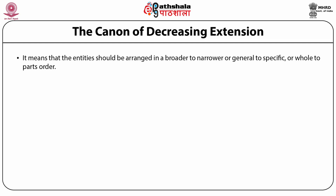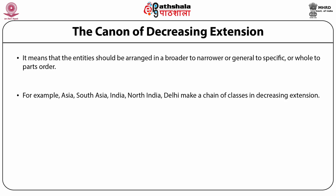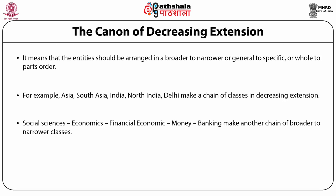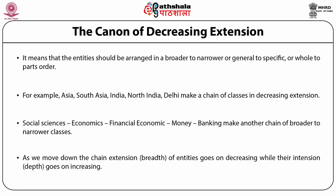The Canon of Decreasing Extension means that entities should be arranged in broader to narrower, or general to specific, or wholes to parts order. For example, Asia, South Asia, India, North India, Delhi make a chain of classes in decreasing extension — Asia is the most inclusive and Delhi the least. Similarly, Social Sciences, Economics, Financial Economics, Money, Banking make another chain of broader to narrower classes. As we move down the chain, extension (breadth) goes on decreasing while intension (depth) goes on increasing. The order of chain should be from decreasing extension to increasing intension.